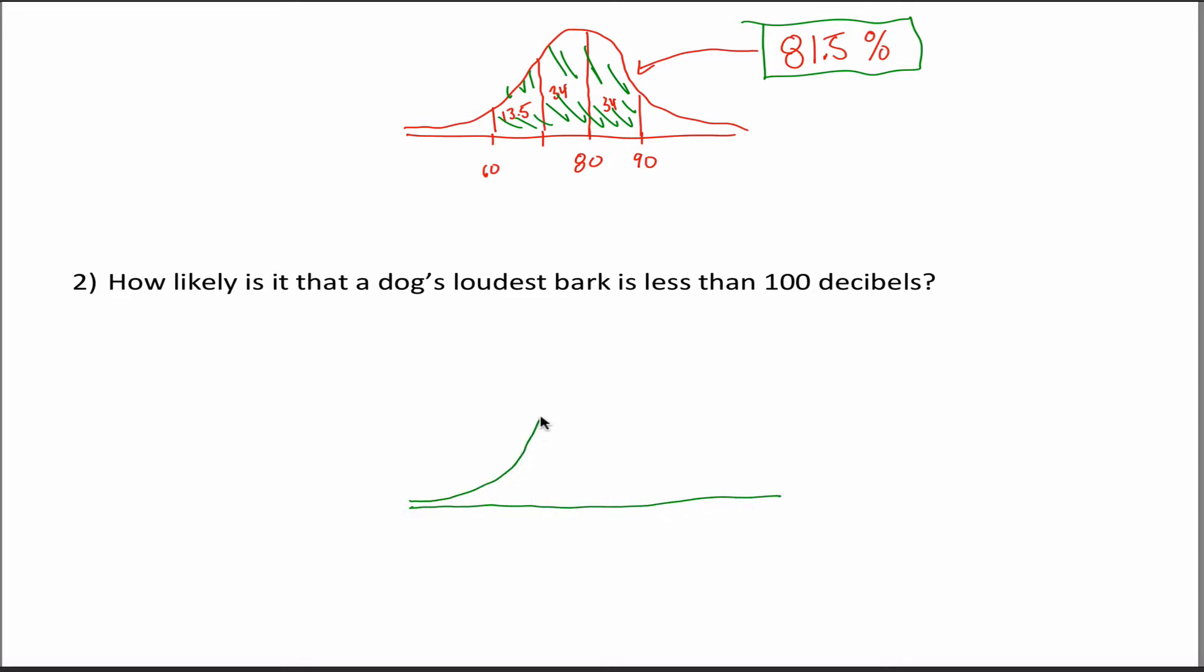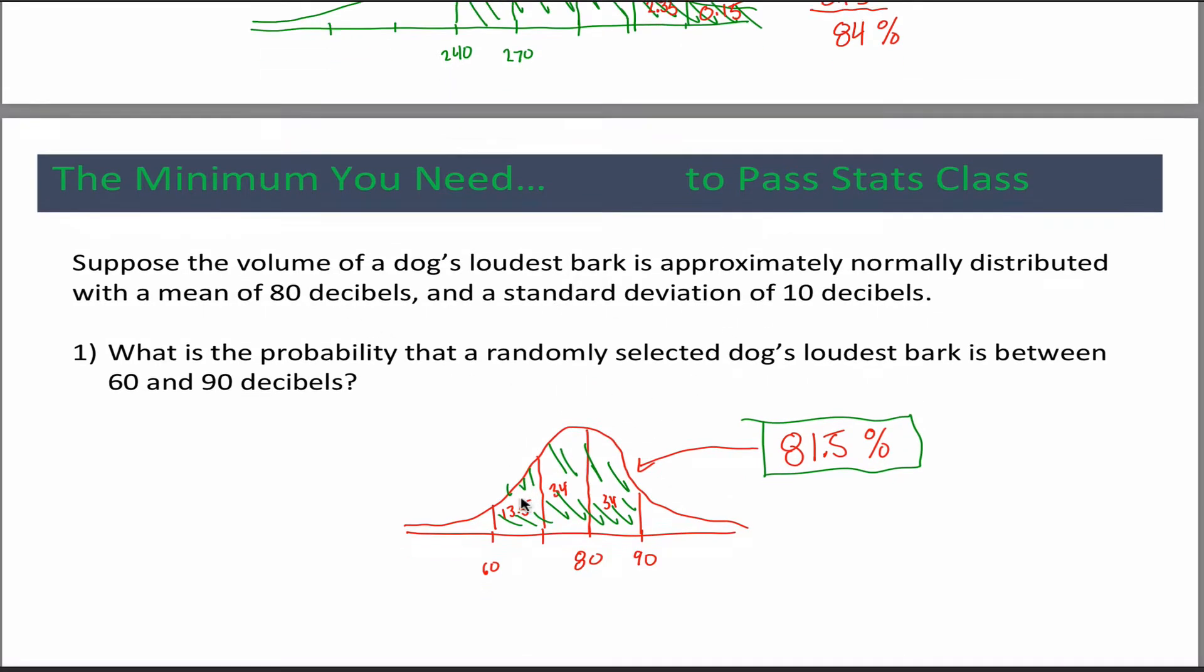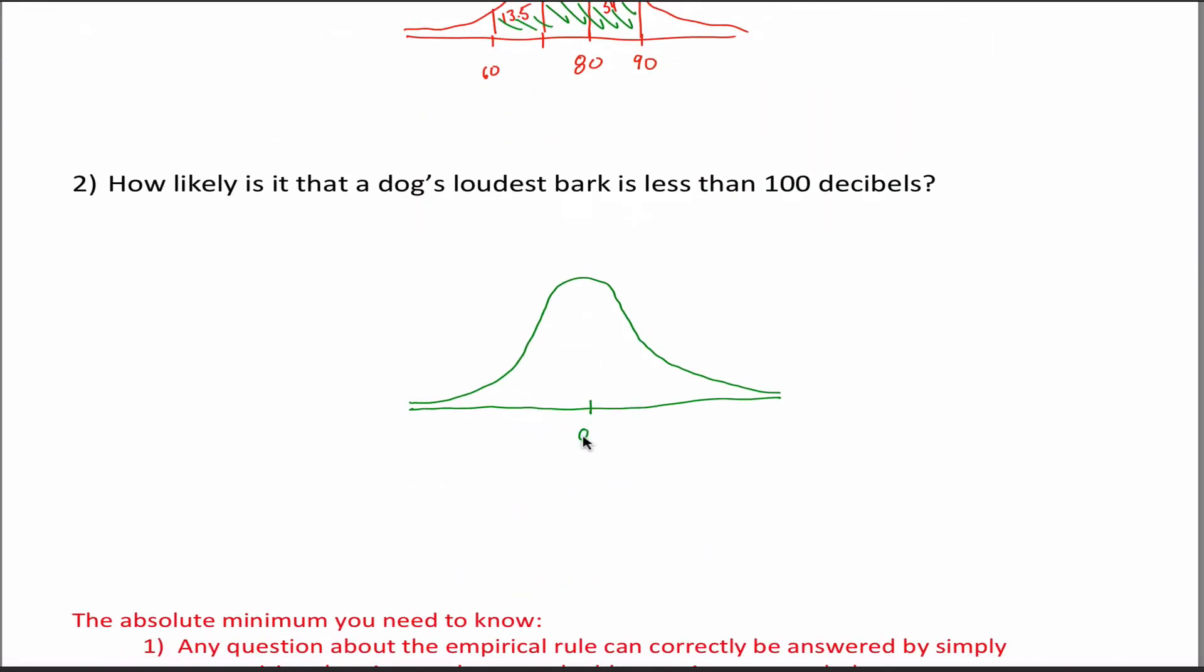Well, we just draw our picture again. Remember that with dog barks, the mean is 80, and the standard deviation is 10. We got 80. Sorry about that noise. That's my dog drinking water. 90, 100, 110. My dog, the inspiration for this video because she was barking when I was trying to make these earlier. Less than 100. Let's talk about this region over here.